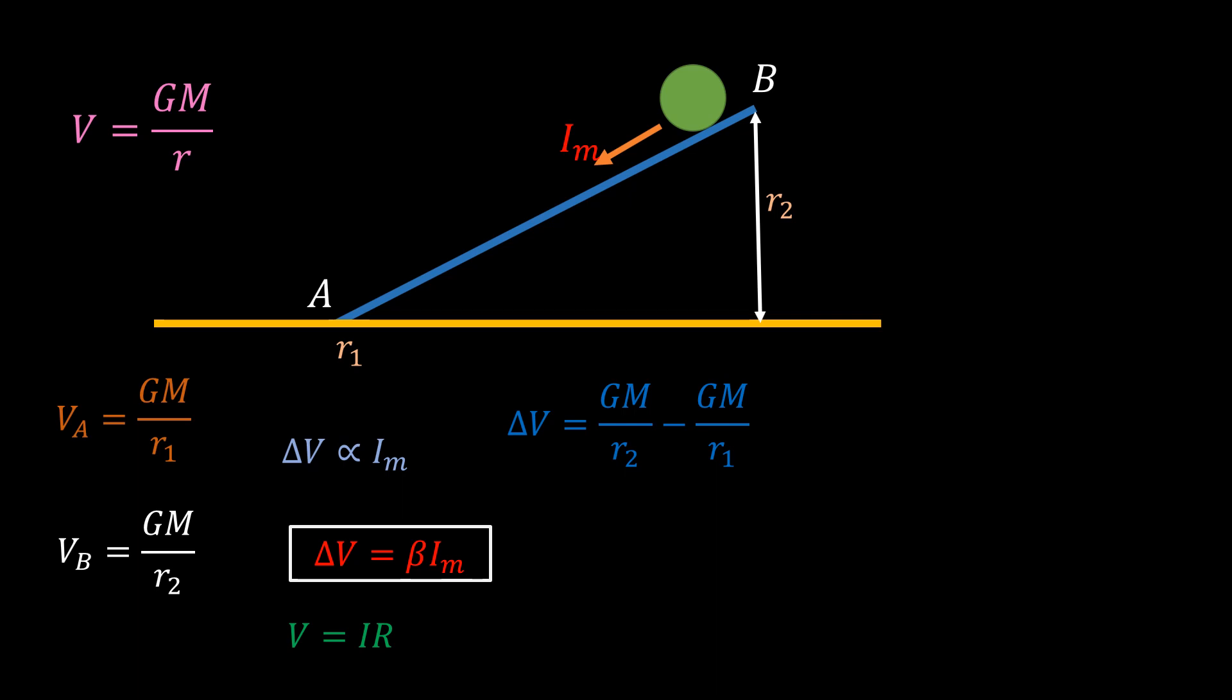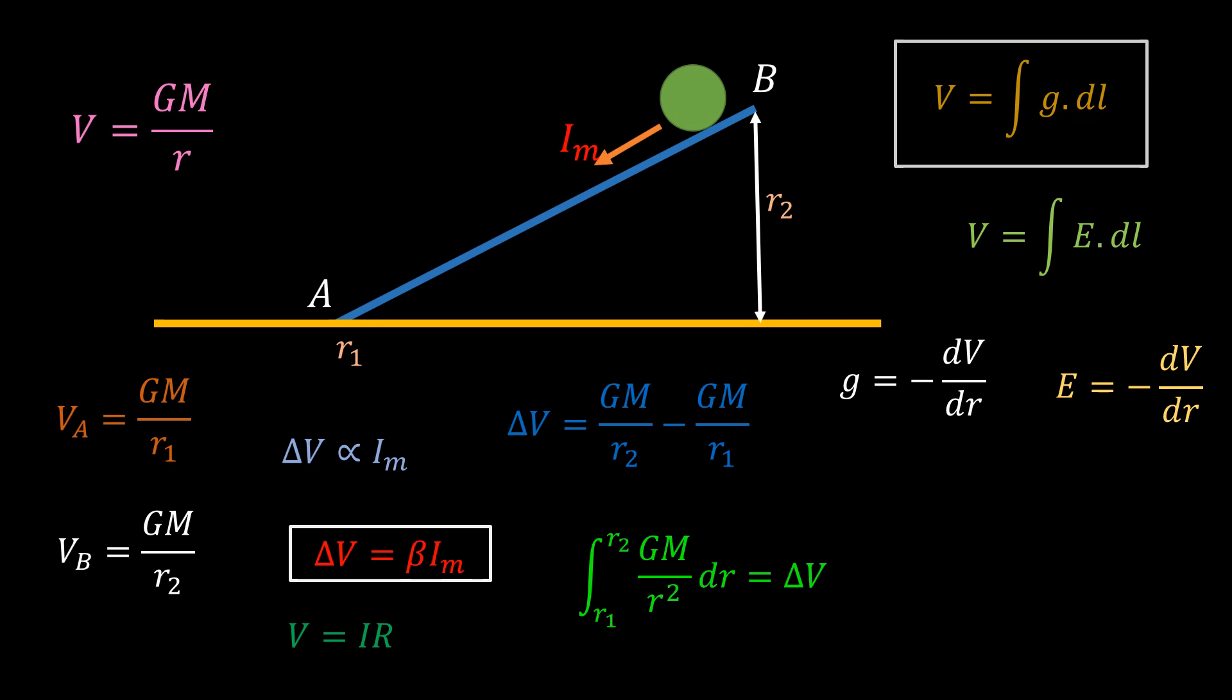Delta V is the potential of B minus the potential of A. If you integrate the gravitational field from A to B, that is from R1 to R2, you get the same expression as delta V. So delta V is equal to the integral from R1 to R2 of G dot dl. In electrostatics, this equation is as follows. This again shows you that G and E are equivalent. Also, G is equal to minus the derivative of the gravitational potential with respect to distance, just like E is equal to minus the derivative of the electric potential with respect to distance.